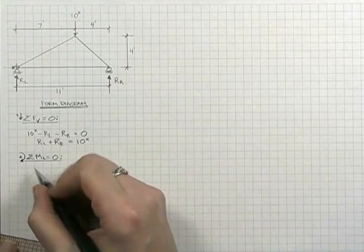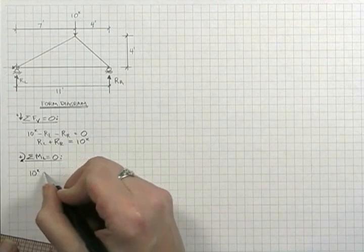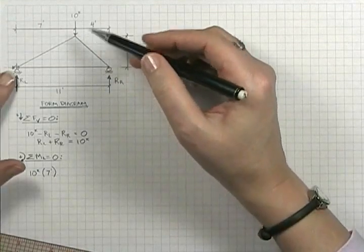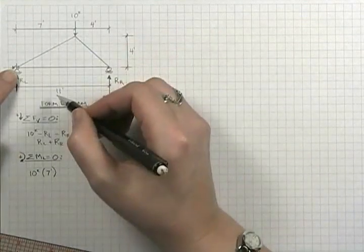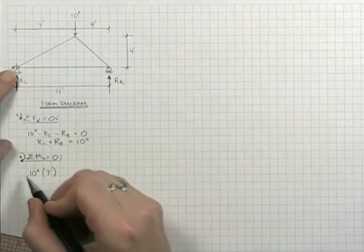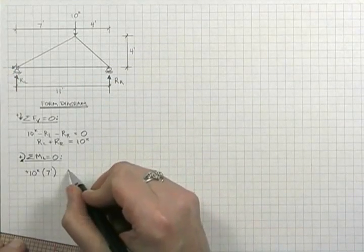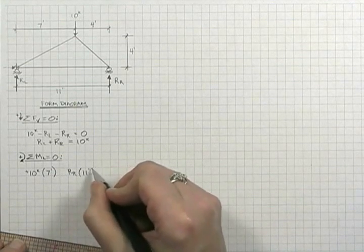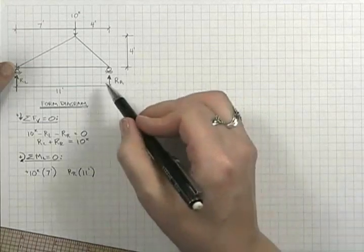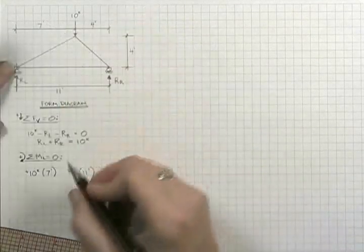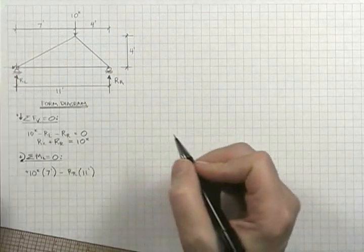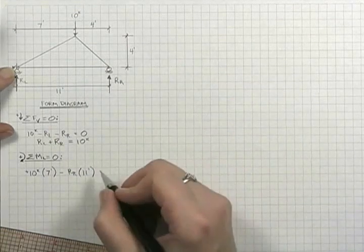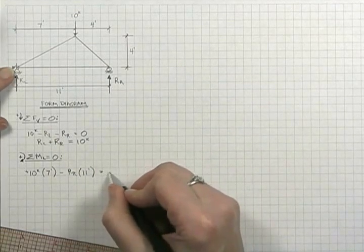So summing moments about the left-hand end, we have ten kips at a distance of seven feet. With respect to the left-hand end, it has a tendency to rotate in the clockwise direction, therefore we call that positive. And then we have r right. Its moment arm is eleven feet. With respect to the left-hand end, it tends to rotate counter-clockwise, therefore negative. And with respect to the left-hand end, those are the only two forces that act to rotate the system. So they balance out to zero.